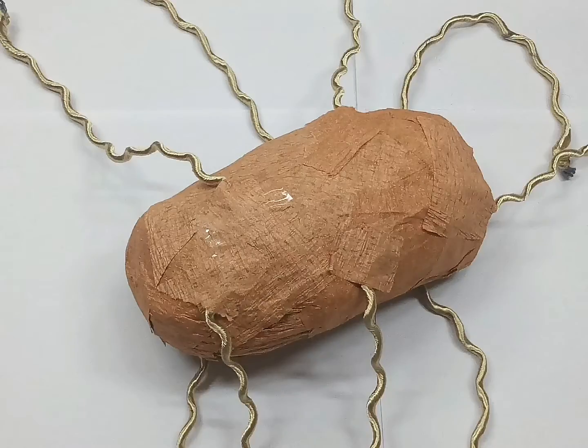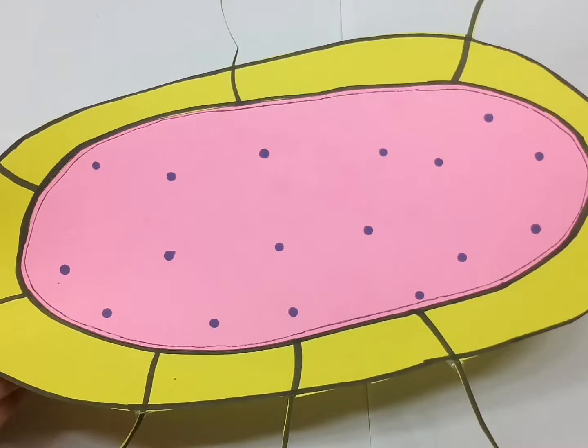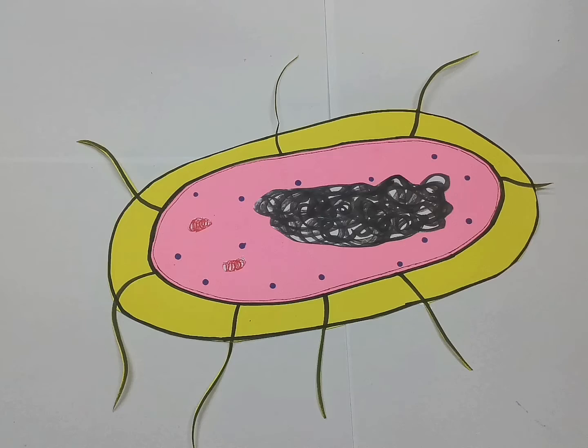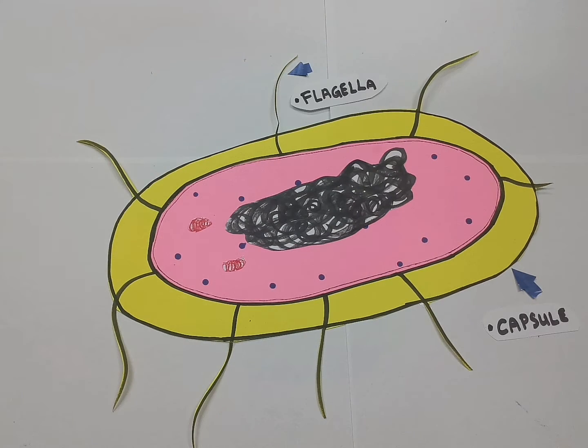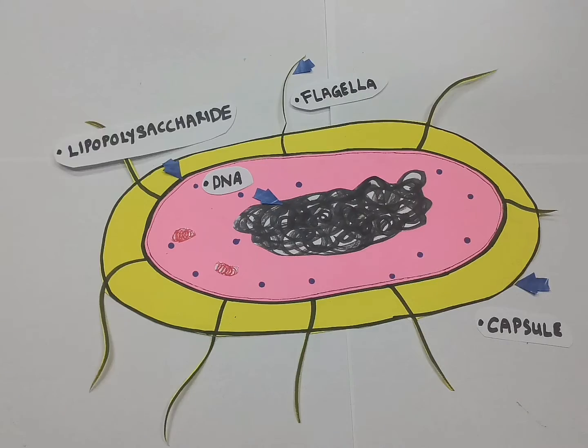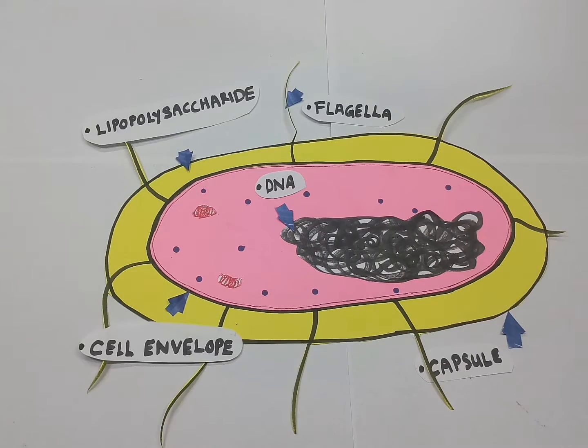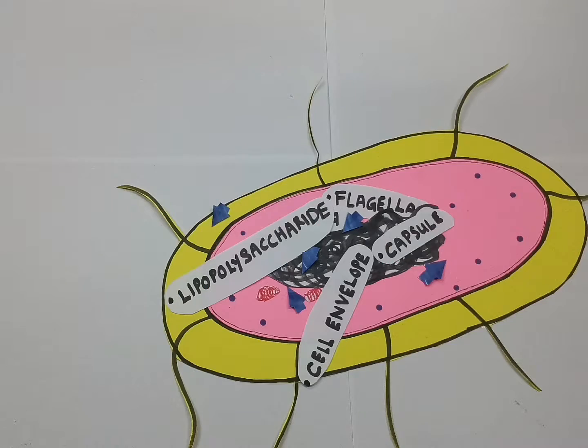In cross-section view of Edwardsiella tarda, the basic structure includes the capsule, the flagella, DNA, lipopolysaccharide, and cell envelope, which consists of cytoplasmic membrane, peptidoglycan, and outer membrane.